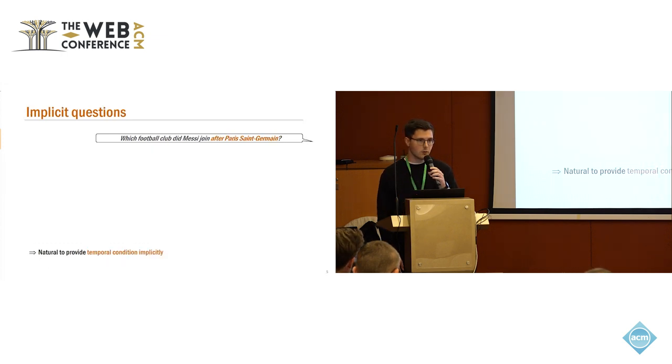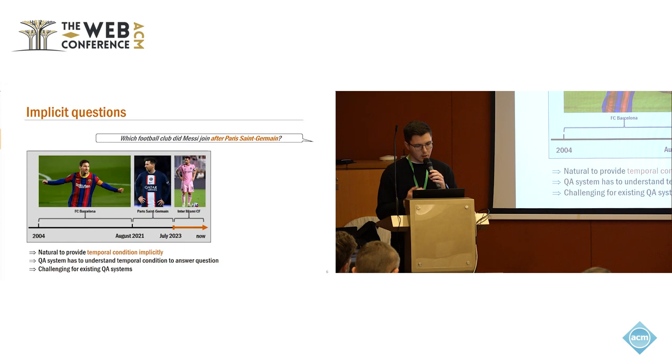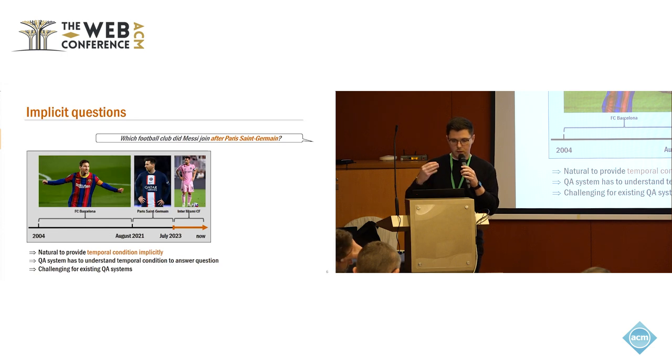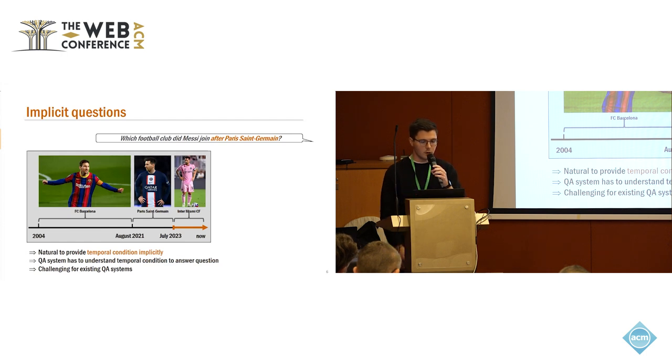Many user questions are time sensitive and the temporal condition can often be explicitly given, as in this case, which mentions in 2023. On the other hand, it is also natural and often the case that this temporal condition is provided implicitly. So consider this new question: which football club did Messi join after Paris Saint-Germain, where this in 2023 isn't spelled out explicitly anymore, but is hidden behind the fact that he played for Paris Saint-Germain after this time point. For these kind of queries, it is decisive that the QA system has to understand this implicit temporal constraint, has to map it to some explicit date or point in time, and this is very challenging for existing question answering systems.